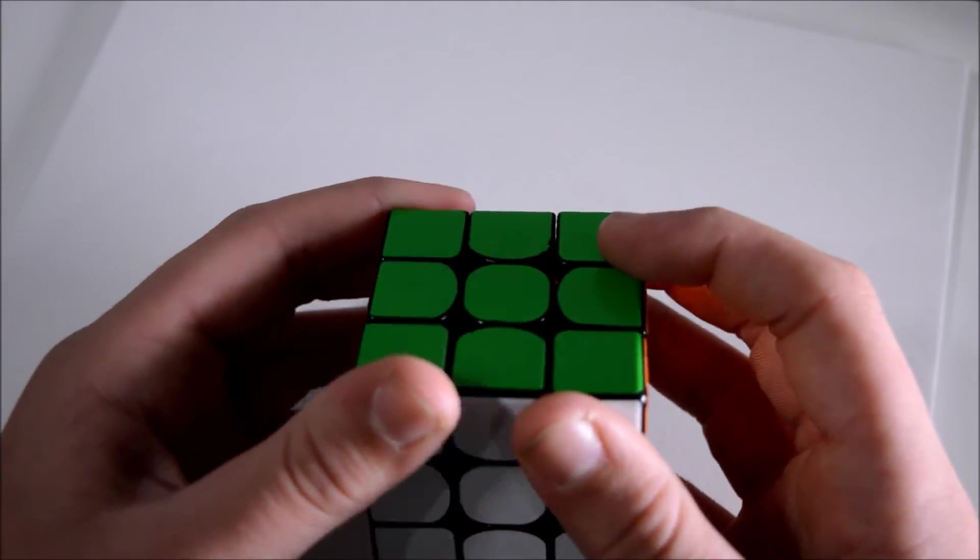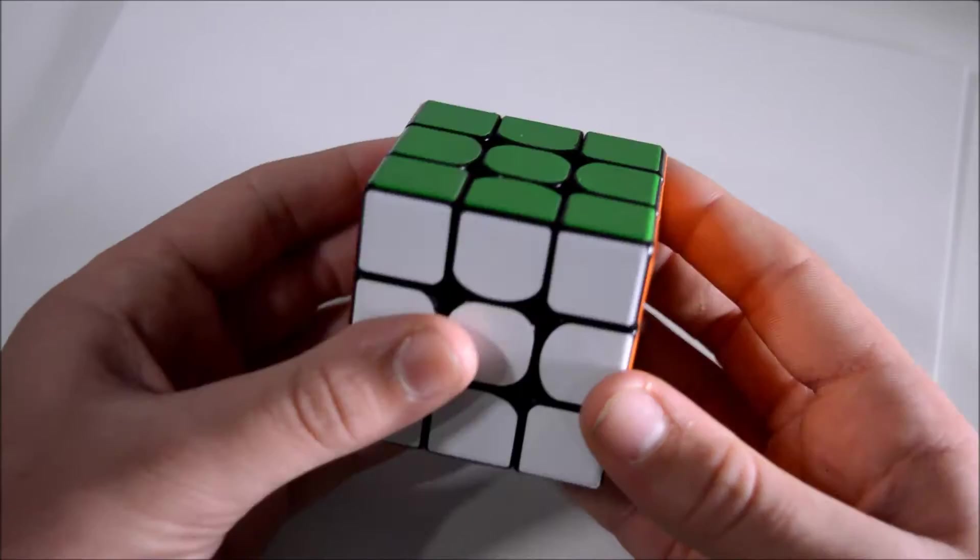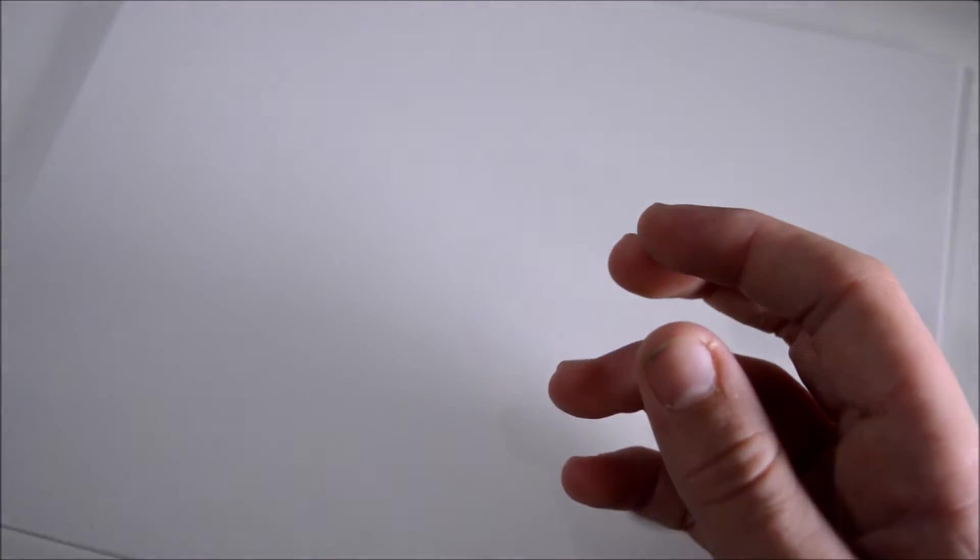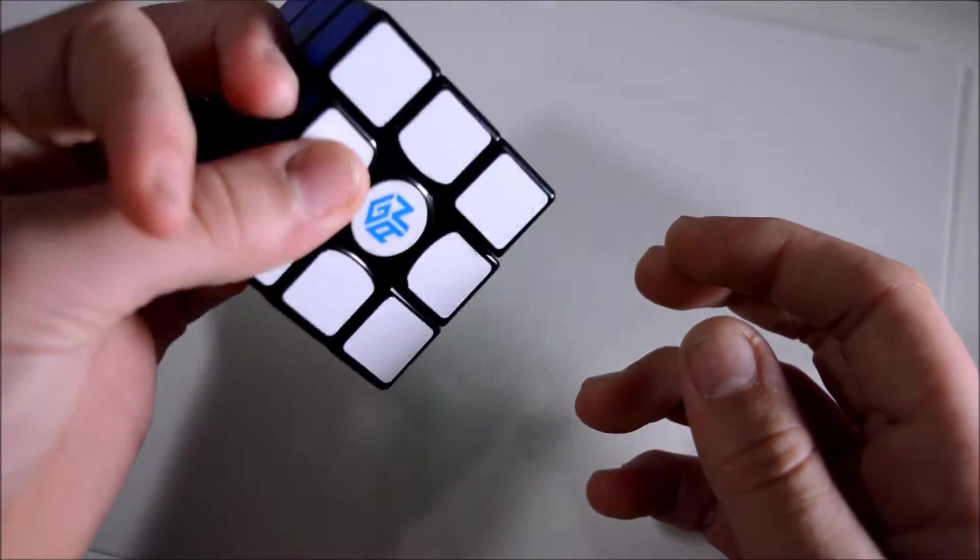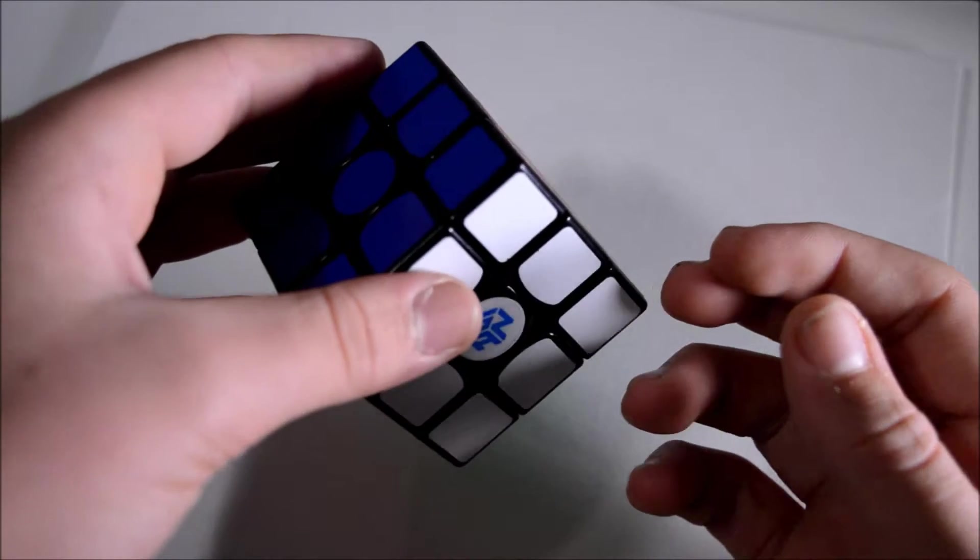So yeah that's basically it. I have made a Magnetic Weilong GTS. It's right here. You can see it lines up in place and honestly this is just an easier version of how to make this cube magnetic. So anyway let's get into it and what materials you're going to need.